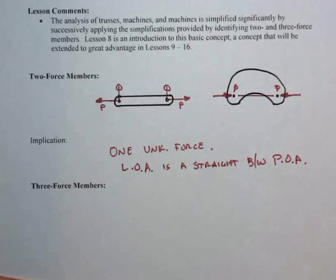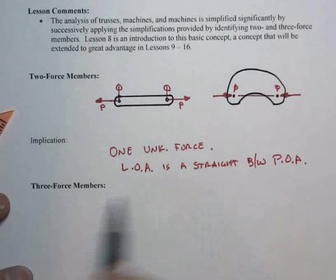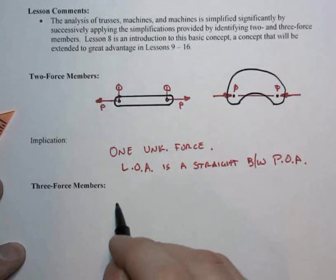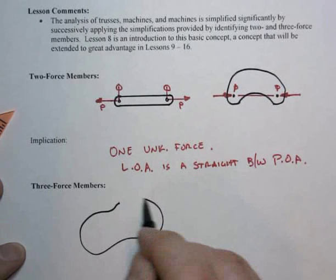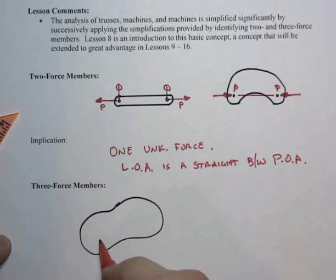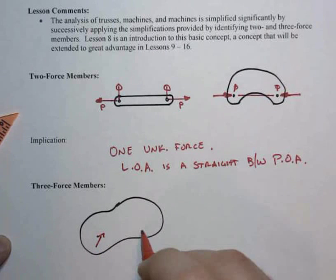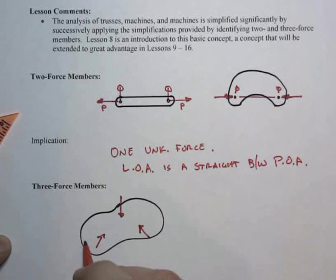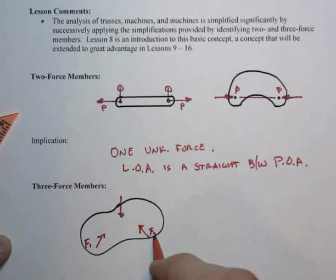Now, three-force members are similar in the sense that it is a literal interpretation of the label that we've got. Three-force members means there's a total of three forces on the body. So now we are going to do the potato. And we have only three forces. No couples being applied here. So three forces. And we'll call them F1, F2, and F3.